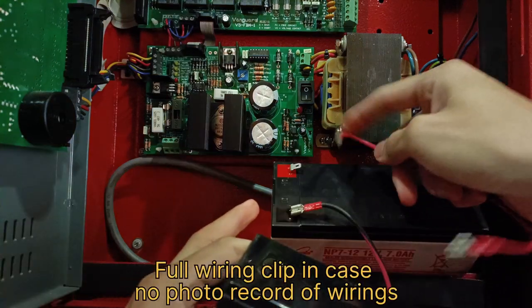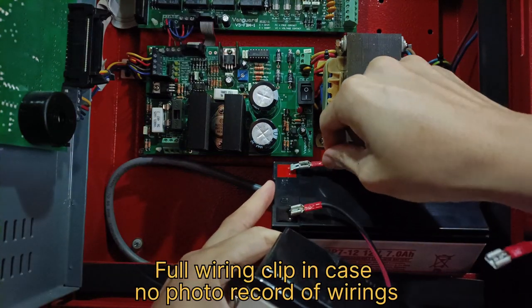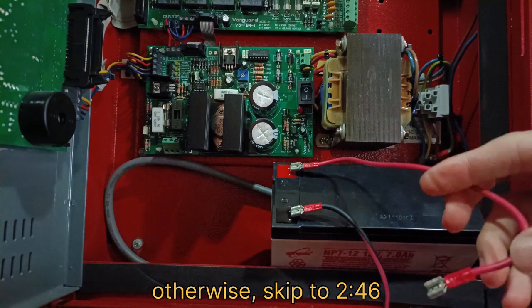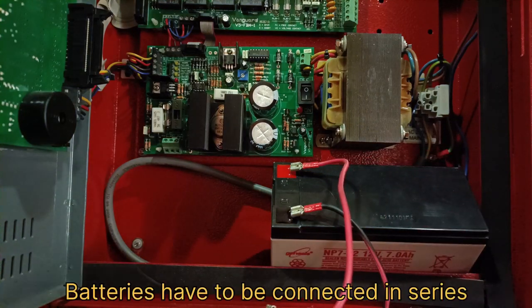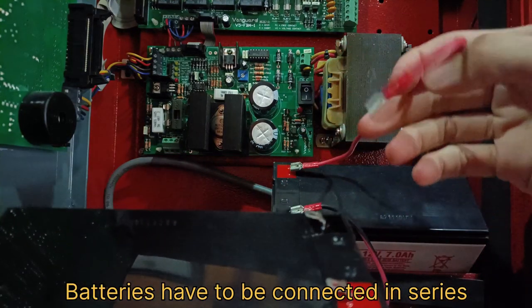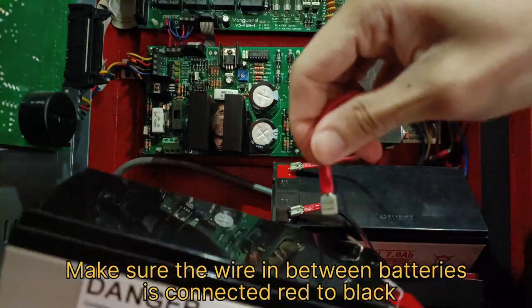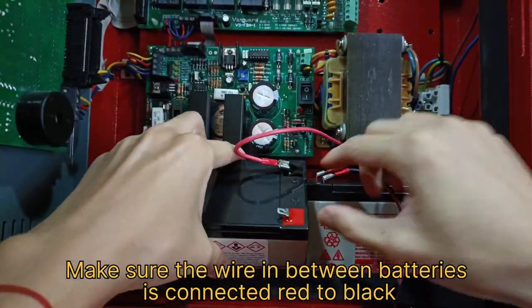This is a full wiring recording clip in case you didn't record the photo. Otherwise you can skip to 2 minutes and 26 seconds. The batteries have to be connected in series. Make sure that the wire in between the batteries is connected red to black.